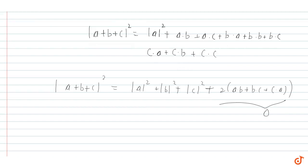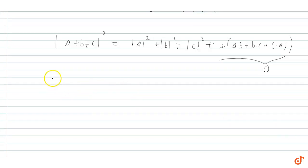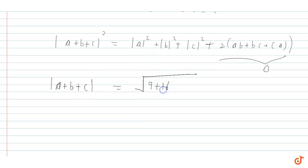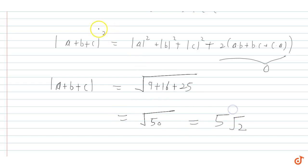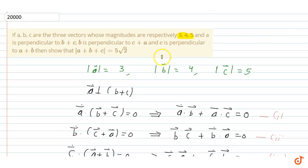Taking the square root of both sides: |A+B+C| = √(|A|² + |B|² + |C|²) = √(9 + 16 + 25) = √50 = 5 root 2. So the magnitude of A plus B plus C equals 5 root 2, which is what we needed to prove.